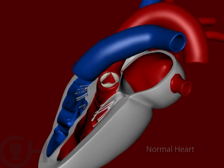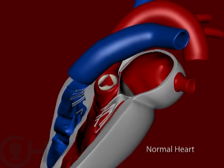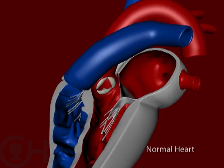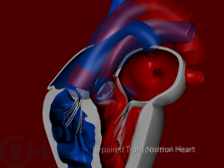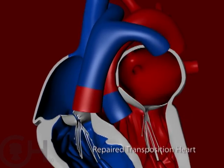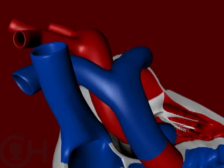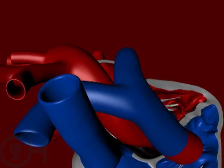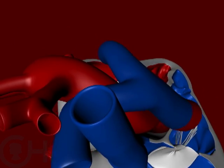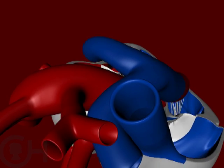Transposition of the great arteries is one of those lesions in which there are rarely other associated defects. In some, after repair, there can be development of narrowing of the pulmonary artery. Normally the pulmonary artery is behind the aorta, but in this situation we now have to put the pulmonary artery in front of the aorta because it's switched. That ends up draping the two pulmonary arteries that go to the right lung and the left lung on top of the aorta.